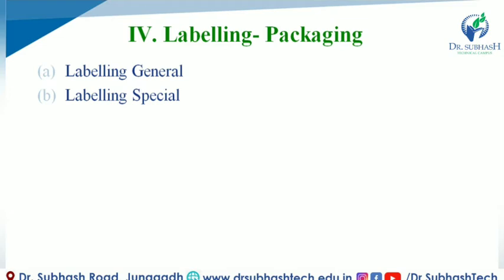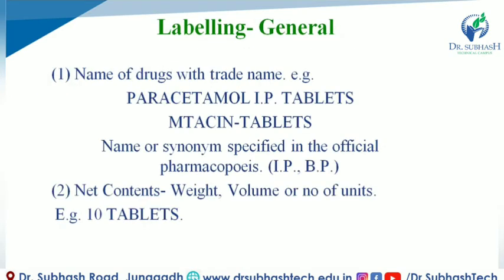Labeling has two types: first, labeling in general case, and second, labeling in special case. General labeling includes the name of the drug substance with its trade name or brand name. Example: paracetamol IP tablets, metacene tablets, and any name or synonym already specified in official pharmacopoeias like Indian Pharmacopoeia and British Pharmacopoeia.